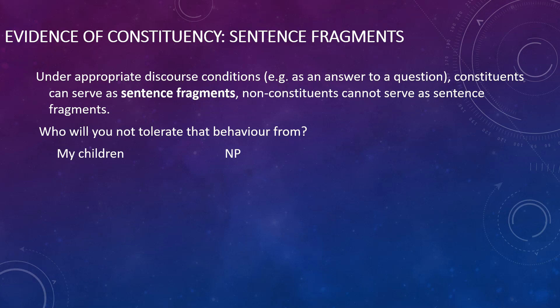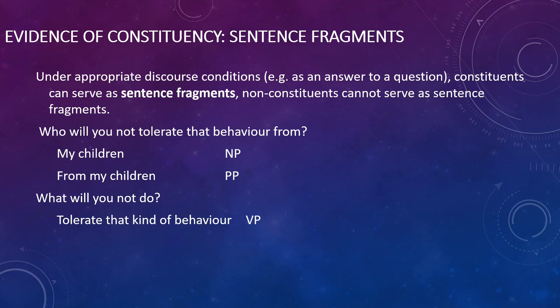You could also respond to that question by saying 'from my children.' So: 'Who will you not tolerate that behavior from?' — 'From my children.' Again, this is a sentence fragment, but it also tells us that this is a prepositional phrase. Putting these two pieces of information together, we can see that a prepositional phrase must include a noun phrase. I could ask 'What will you not do?' and the answer might be 'tolerate that kind of behavior' — a sentence fragment that starts with the verb 'tolerate' and has an object after it, suggesting this could be a verb phrase.